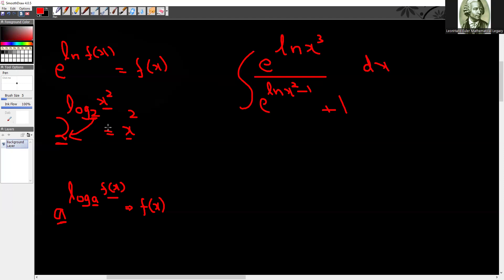So if you don't know this property, obviously this would look very scary to you. But if you examine it closely, natural log of base e, that would simply be equal to x cubed divided by x squared minus one.